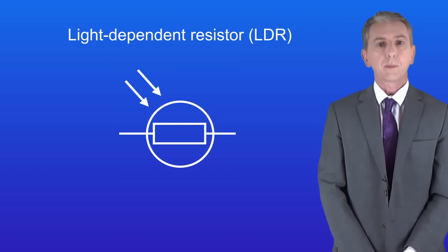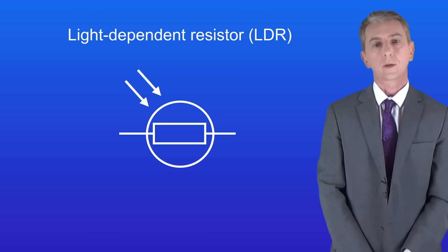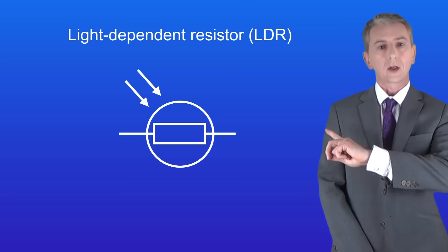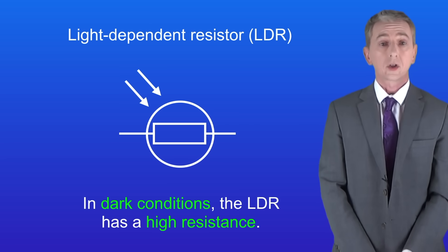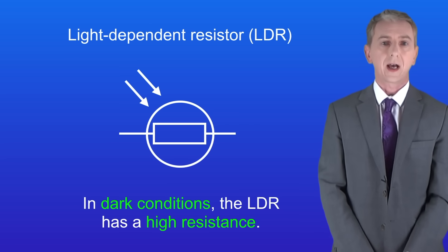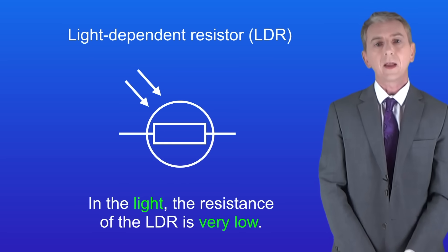It's called a light-dependent resistor or LDR for short. Here's a symbol for an LDR and it's important that you learn this. Now in dark conditions the LDR has a high resistance. However, in the light the resistance of the LDR is very low.